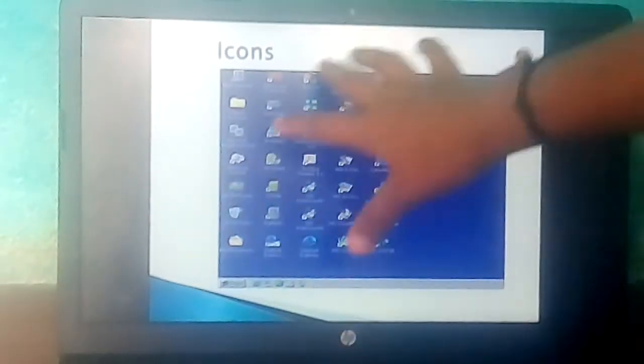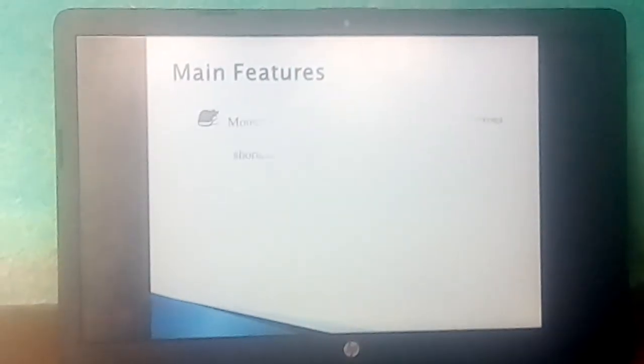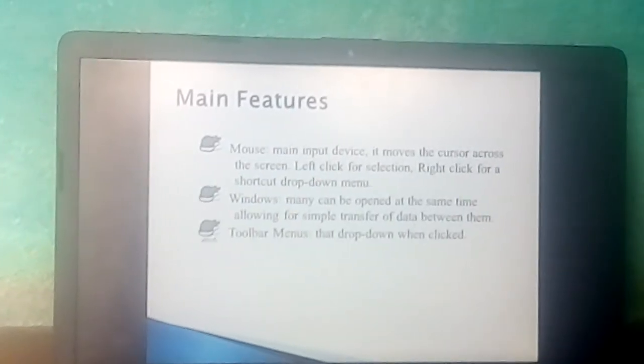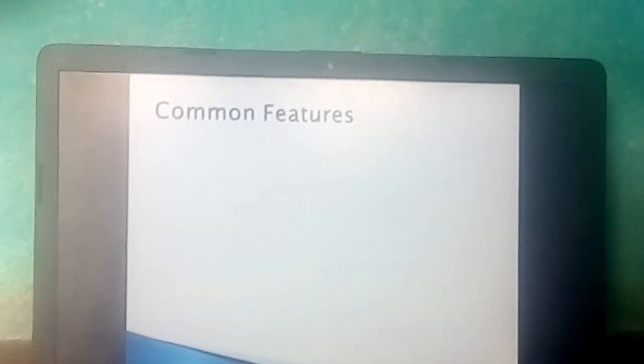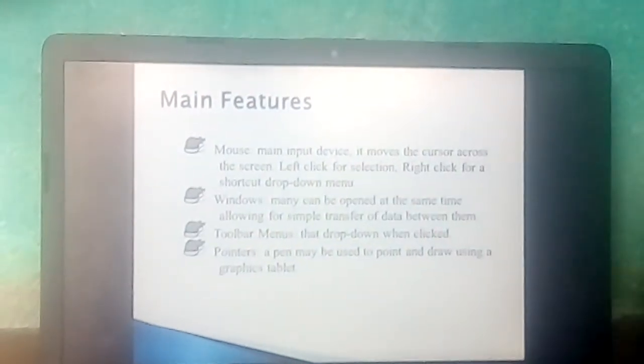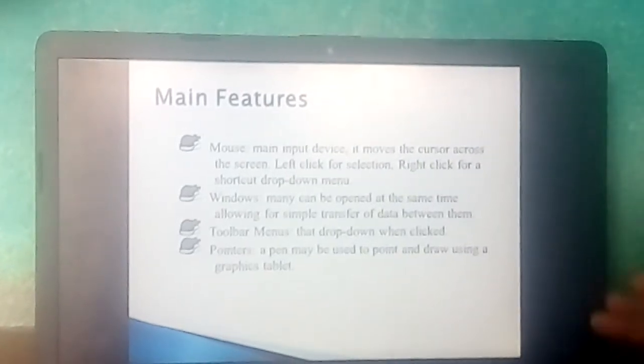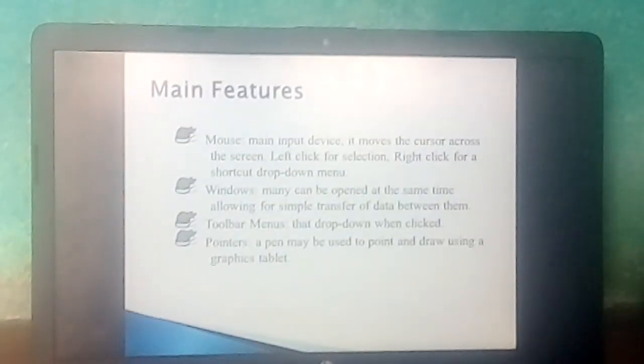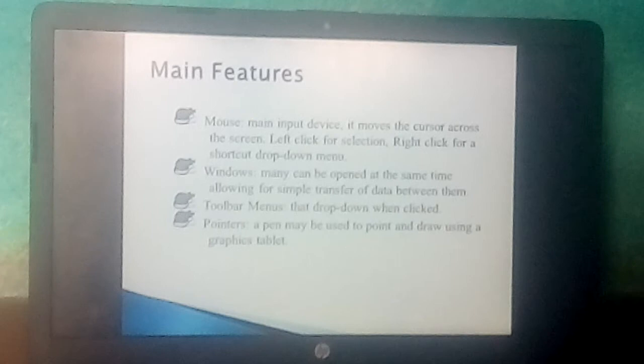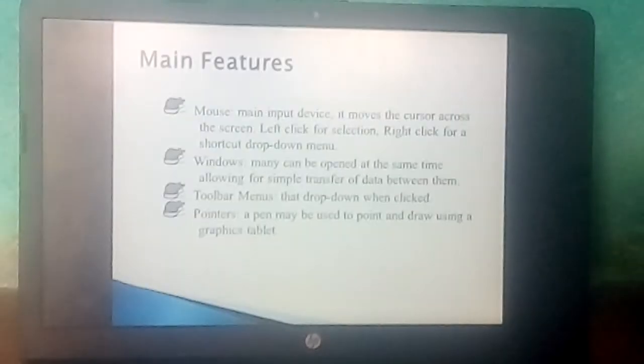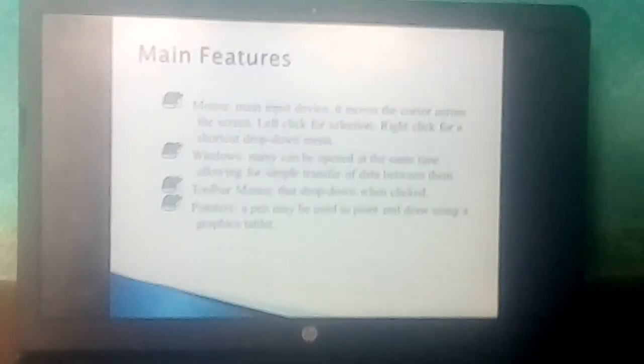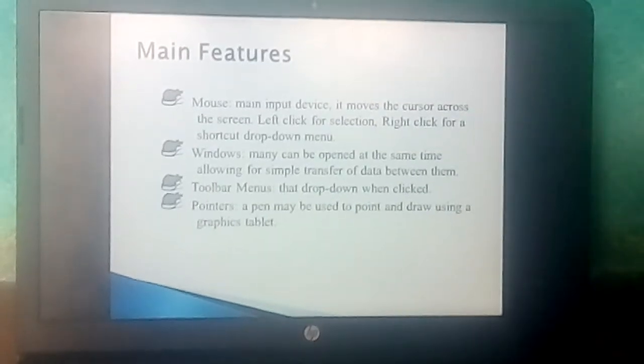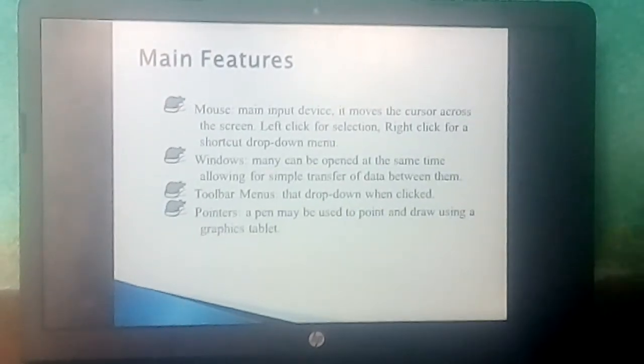Main features: Mouse is the main input device and it moves the cursor across the screen. Left click for selection and right click for shortcut drop-down menu. Windows: many can be opened at the same time allowing for simple transfer of data between them. Toolbar menus that drop down when clicked. Pointers: a pen may be used to point and draw using a graphics tablet.